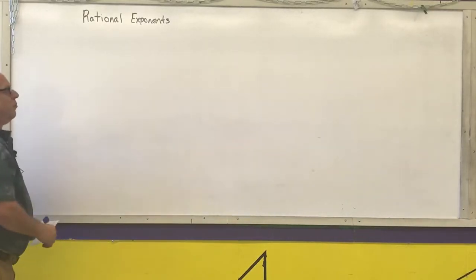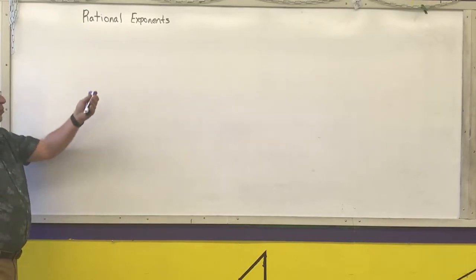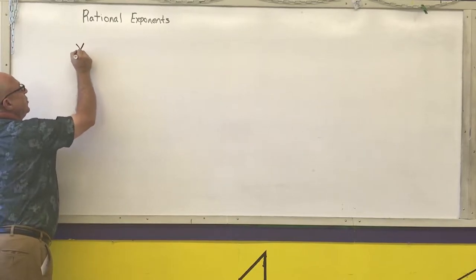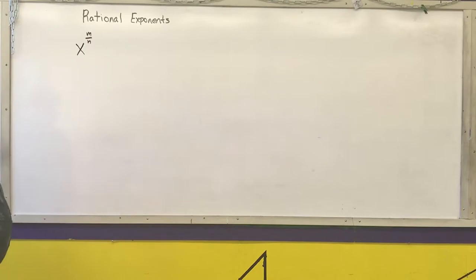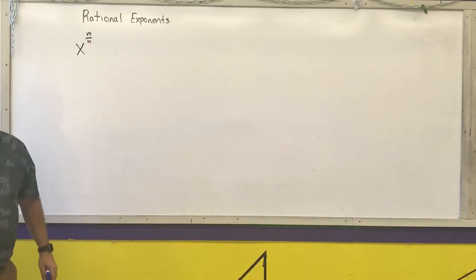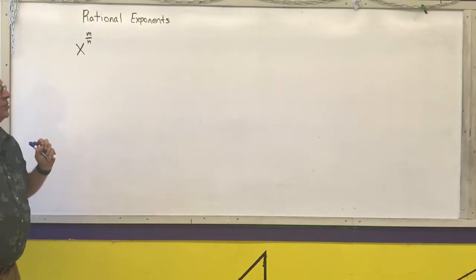In this video, we're going to talk about rational exponents. The reason why they're called rational exponents is because the exponents are made up of a fraction. Remember, it's a fraction of integers where the denominator is not equal to zero. That's the definition of a rational number.